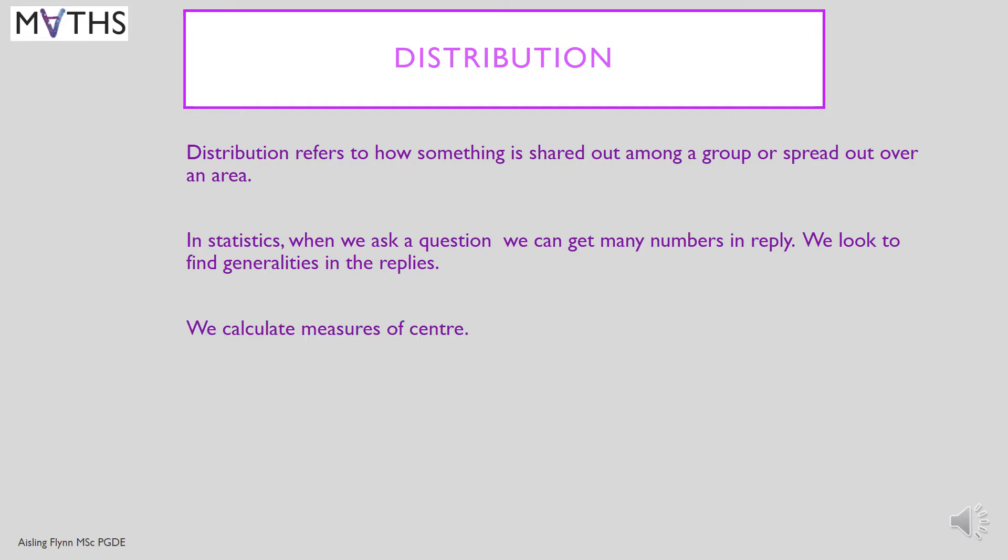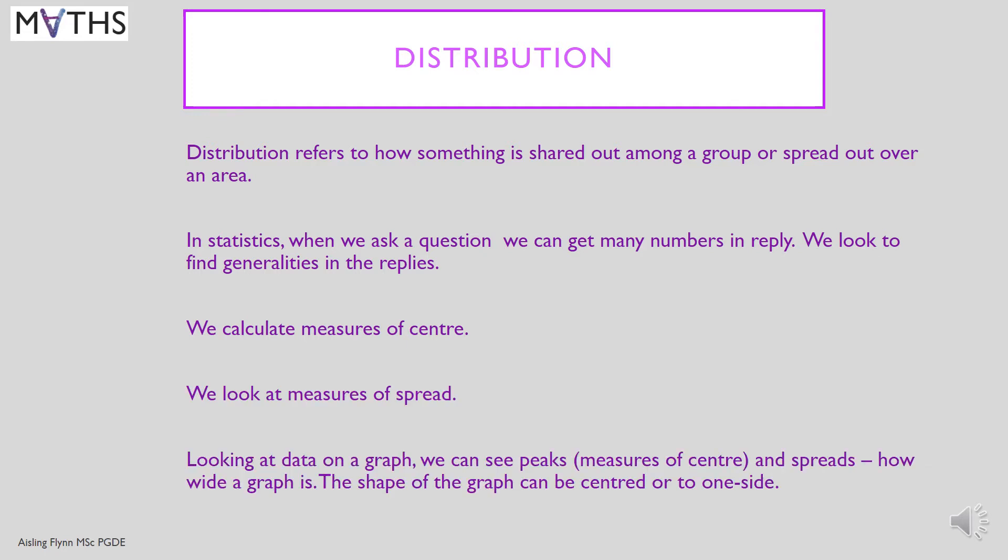We calculate measures of centre, we look at measures of spread, and looking at the data on a graph we can see these things. We can see peaks which indicate measures of centre and we can see spreads, how wide the graph is, and the shape of the graph can be centred or it can be to one side. All this information can be described by what we call the distribution of the data.